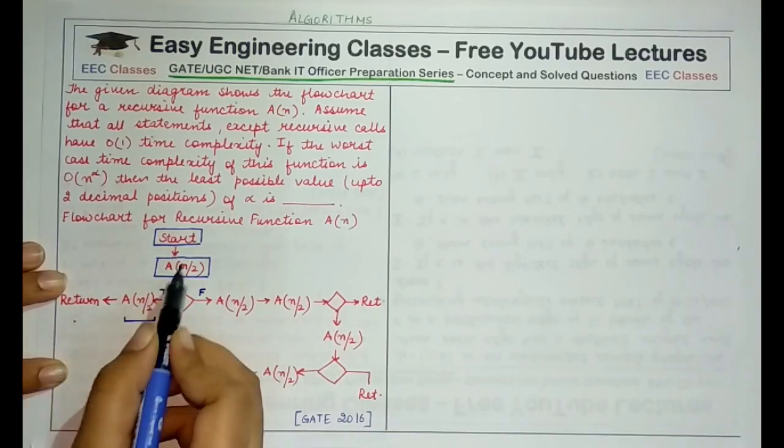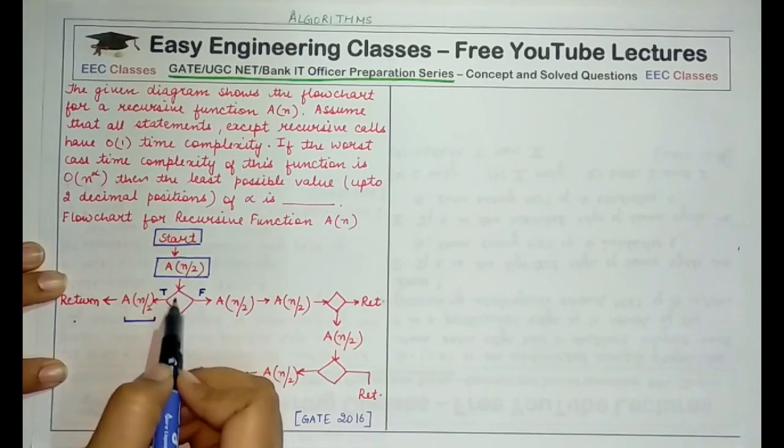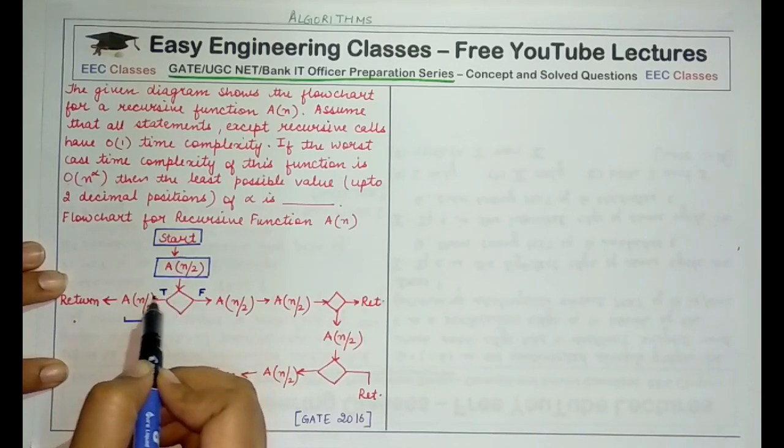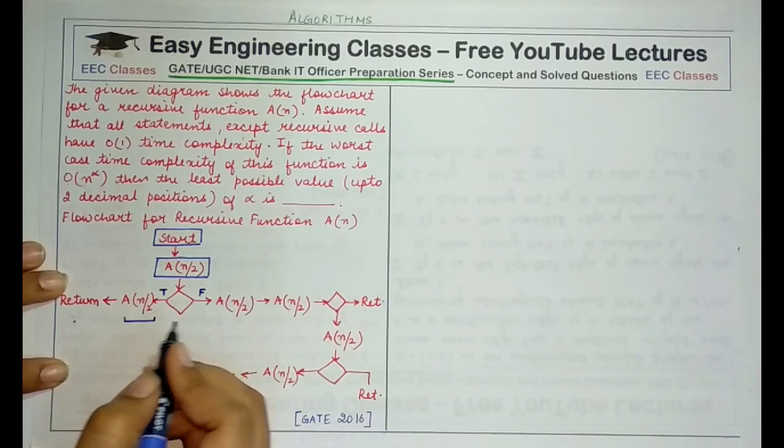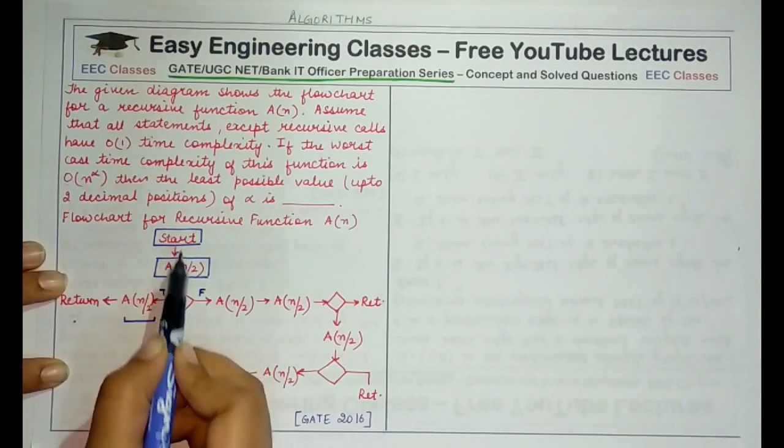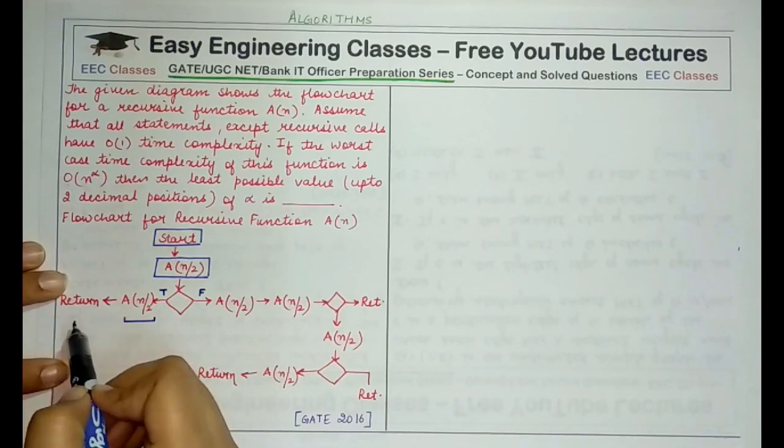So the case exits here. That means when the decision node answer is true, the path would be followed like start, A(n/2), A(n/2), and then return.